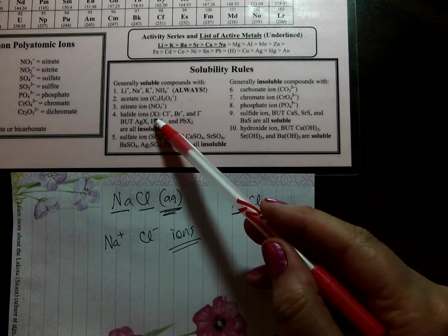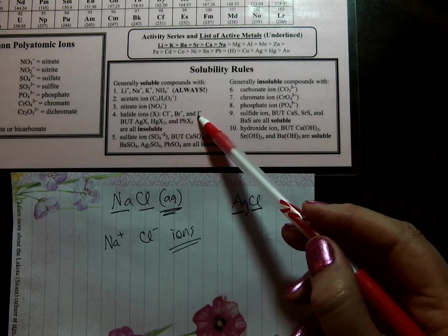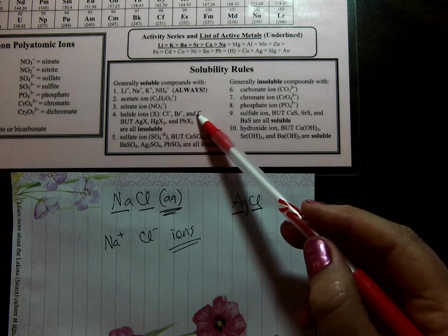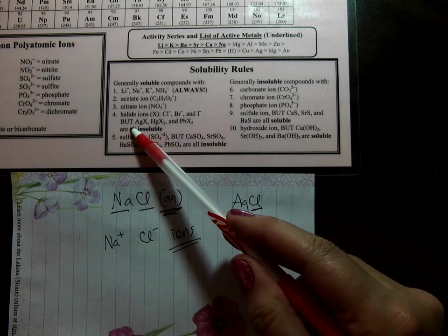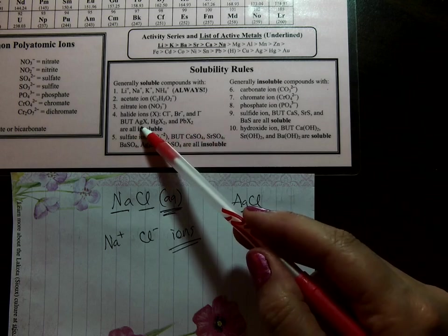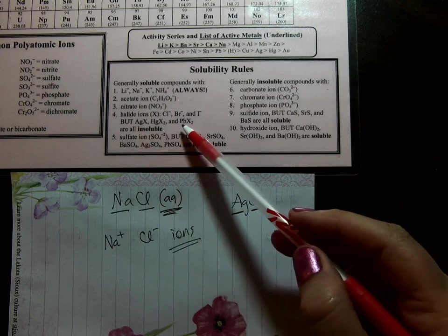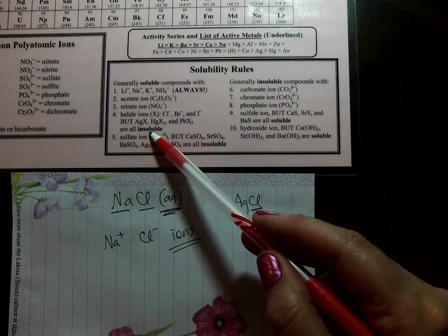So this rule number 4 is a little confusing. It's for Cl, or Br, or I compounds. And they are soluble unless the Cl, Br, or I is bonded to silver, mercury, or lead, in which case it's insoluble.